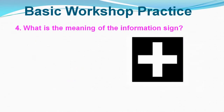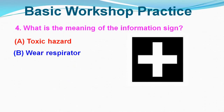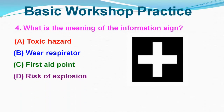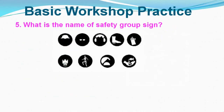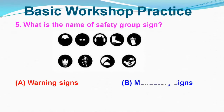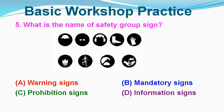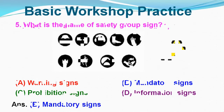Question No. 4: What is the meaning of the information sign? Option A: Toxic Hazard, Option B: Wear Respirator, Option C: First Aid Point, Option D: Risk of Explosion. Correct answer is Option C, First Aid Point. Question No. 5: What is the name of the safety group sign? Option A: Warning Signs, Option B: Mandatory Signs, Option C: Prohibition Signs, Option D: Information Signs. Correct answer is Option B, Mandatory Signs.